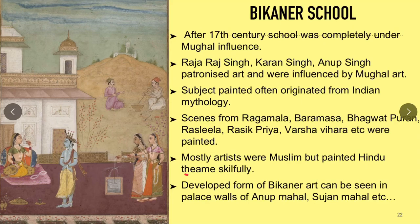The Bikaner style of painting had finer lines and a lesser range of colors than what are typically present in Mughal artwork. Most of the artists of the Bikaner court were Muslims, but they painted Hindu themes skillfully. Some developed forms of Bikaner art can be seen in the palace walls of Anoop Mahal and Sujal Mahal.